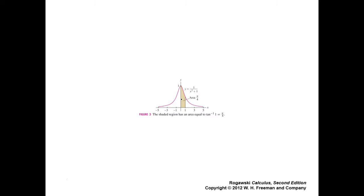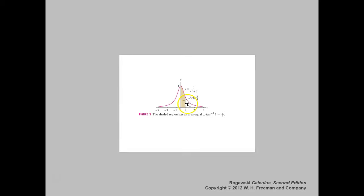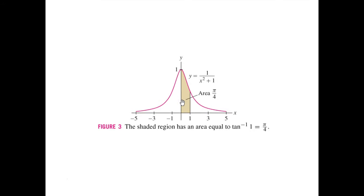One more slide before we move on — here is the inverse tangent. This is 1 over x squared plus 1, because that is the derivative of the inverse tangent. So the inverse tangent is the area under 1 over x squared plus 1. When x equals 1, this would be 1 over 2. If you do the math, you find out the area is pi over 4.